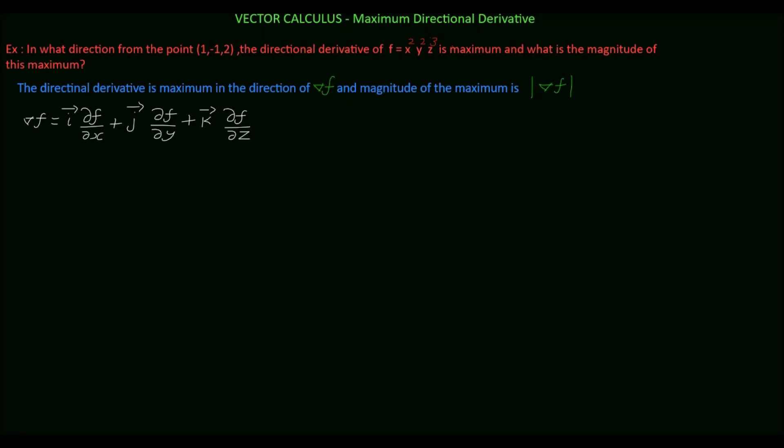In this tutorial we will see how to find the maximum directional derivative and the magnitude of the maximum. The given question is: in what direction from the point is the directional derivative of the function x squared y squared z cube maximum, and what is the magnitude of the maximum? The directional derivative is maximum in the direction of del f, and the magnitude of the maximum is the modulus of del f.